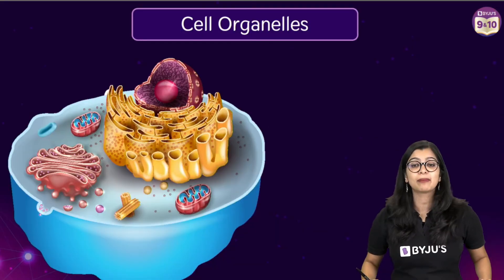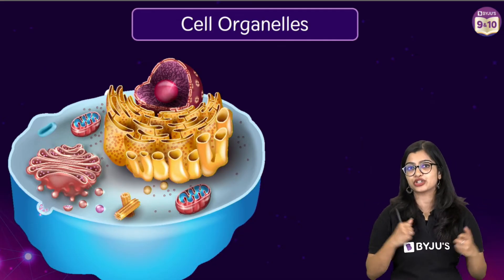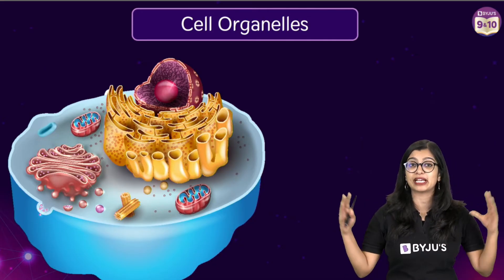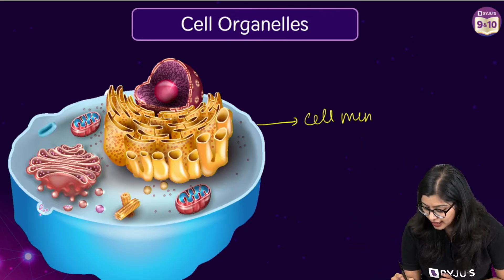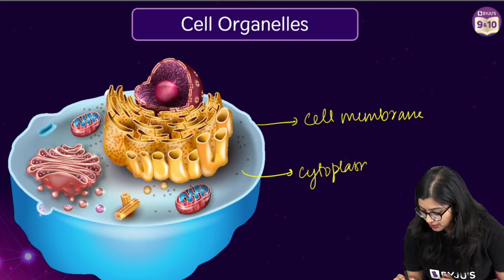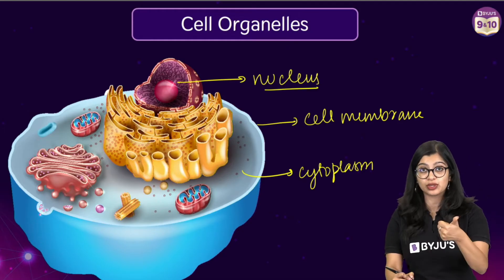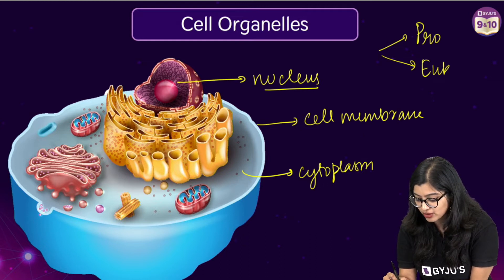When we talk about the cell, we know that the cell is the basic structural and functional unit of life. When we look at all cells, the basic components that they include are the cell membrane, the cytoplasm, and of course the nucleus. Based on the type of nucleus there are two kinds of cells: we have prokaryotic cells and we have eukaryotic cells.